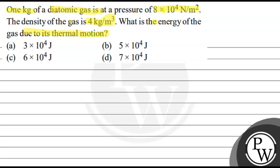I am saying that the mass of gas is 1 kg. It is a diatomic gas. Pressure is 8 into 10 to the power 4 Newton per meter square. Density given is 4 kg per meter cube. And we have to find energy because of thermal motion.